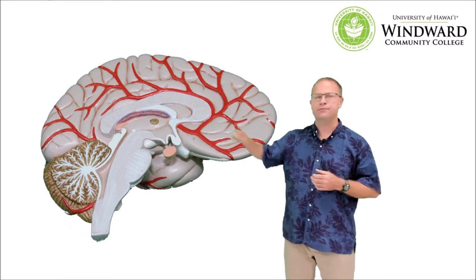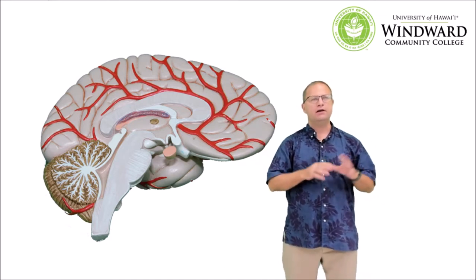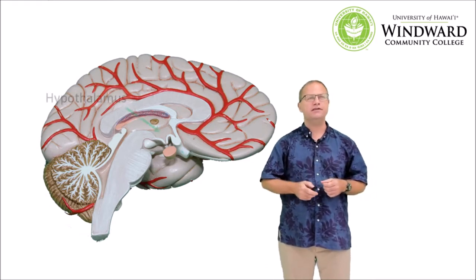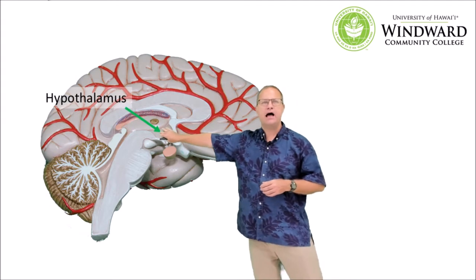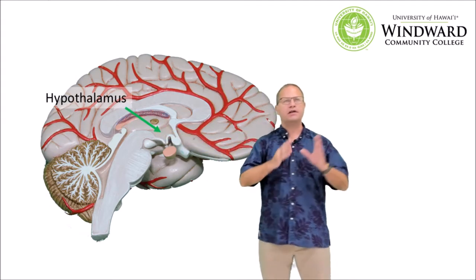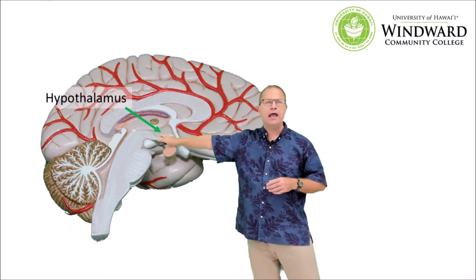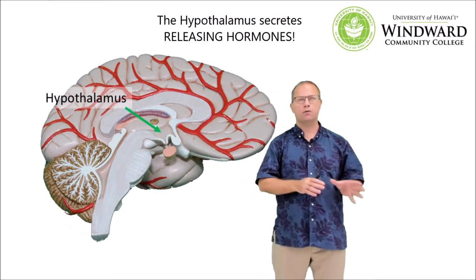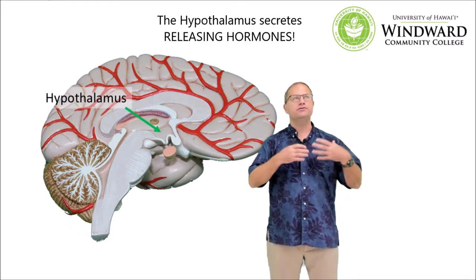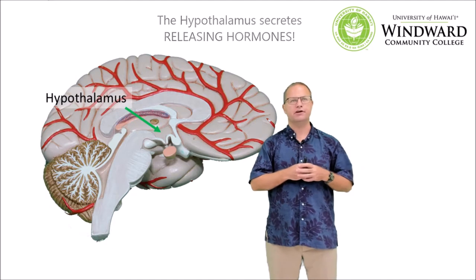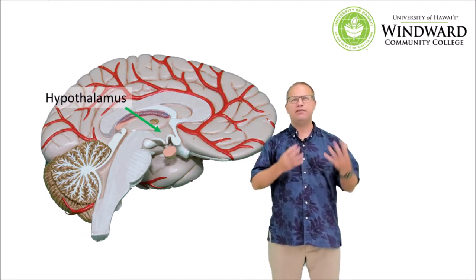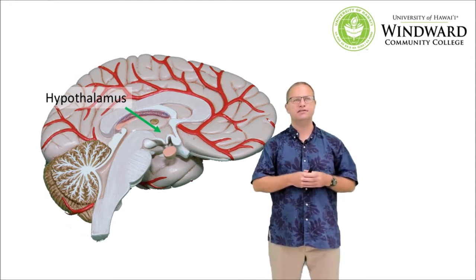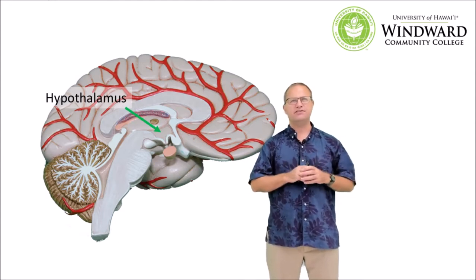First, let's look at the brain. The brain is a nervous tissue organ, but it also has three sub-organs with endocrine functions. The most important of these is the hypothalamus. As the name implies, hypo meaning below, this organ is located below the thalamus. The function of the hypothalamus, as far as the endocrine system goes, is to secrete releasing hormones to control the anterior pituitary and also to generate nerve impulses to control the posterior pituitary. You can think of the hypothalamus as the big boss.